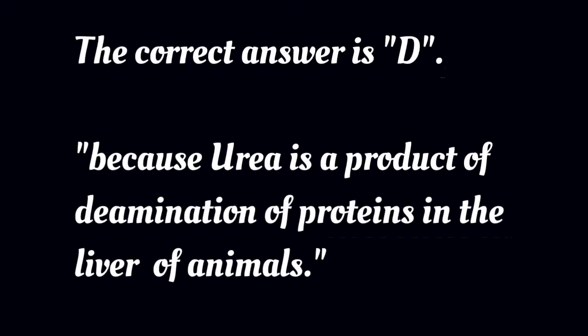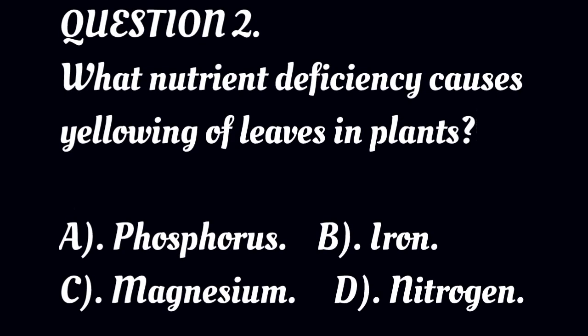The correct answer is D because urea is a product of deamination of proteins in the liver of animals.